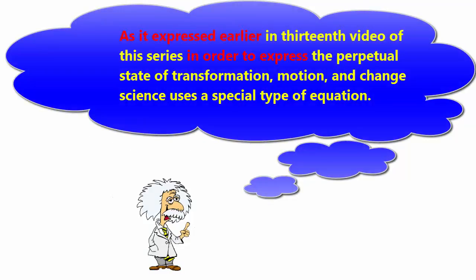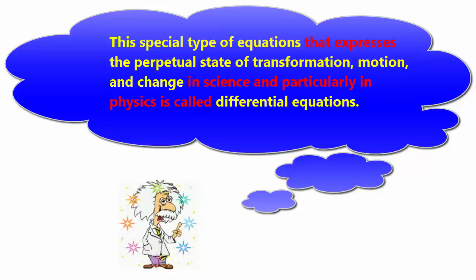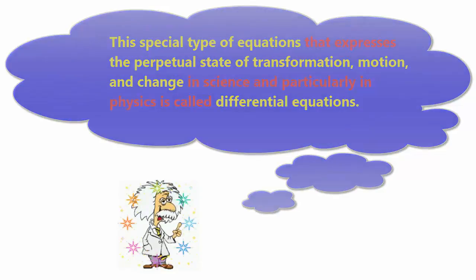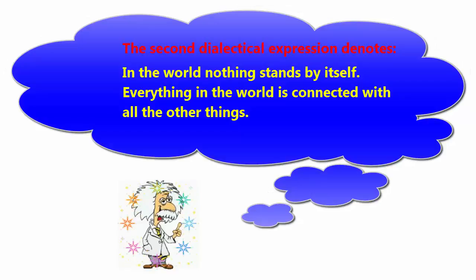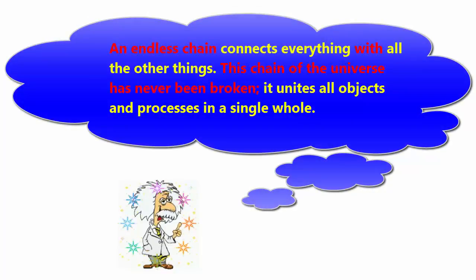As expressed earlier in the 13th video of this series, in order to express the perpetual state of transformation, motion, and change, science uses a special type of equation called differential equations. The second dialectical expression denotes that in the world nothing stands by itself. Everything is connected with all other things. There is an infinite web of connections, from the smallest structures like neutrinos to the largest structures such as superclusters of galaxies.